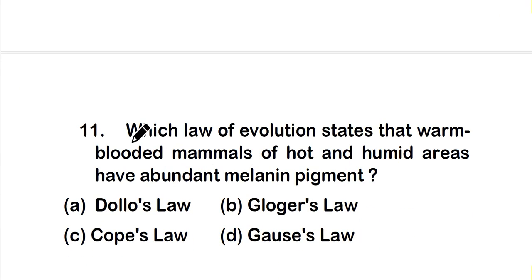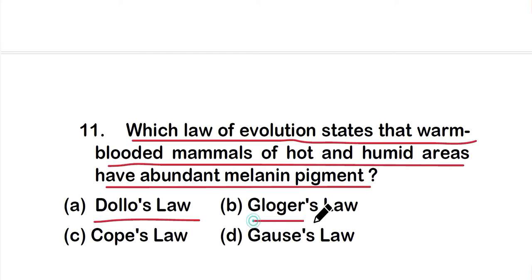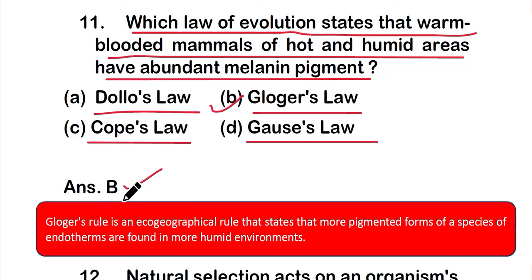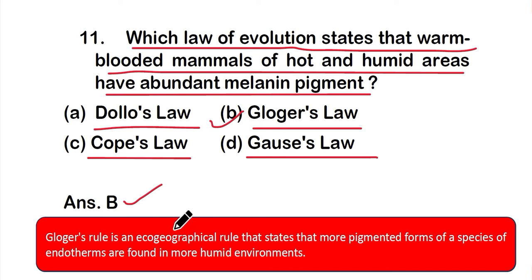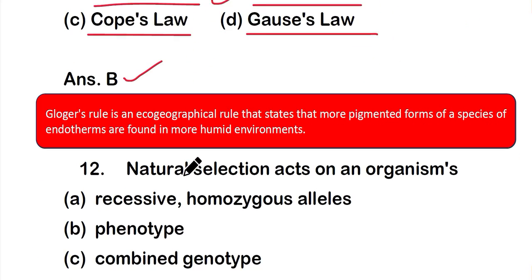Question 11: Which law of evolution states that warm-blooded mammals of hot and humid areas have abundant melanin pigment? Option A: Dollo's law, option B: Gloger's law, option C: Cope's law, or option D: Gauss's law. The correct answer is option B — Gloger's law. Gloger's law is an ecogeographical rule stating that more pigmented forms of a species of endotherms are found in more humid environments. This law states that warm-blooded mammals of hot and humid areas have abundant melanin pigment.